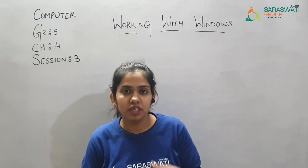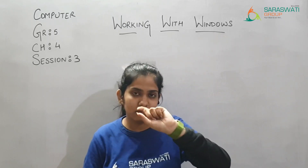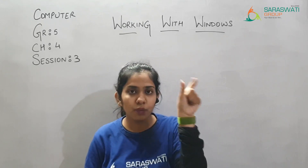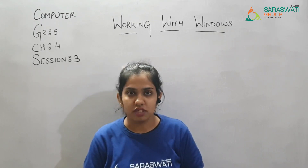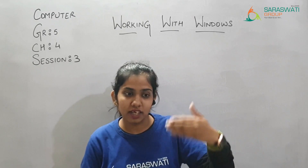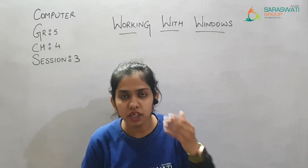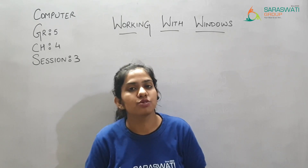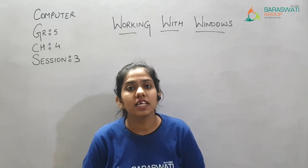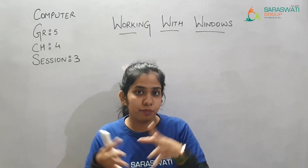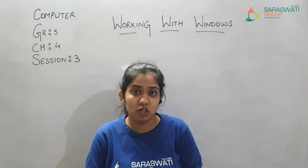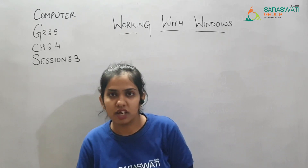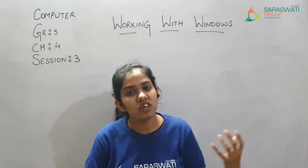On your screen there is an icon with a computer screen drawn, with 'My Computer' written on it. When you double-click on My Computer, it opens and you can see that there are drives — C drive, D drive, and E drive — where we store our information and data.